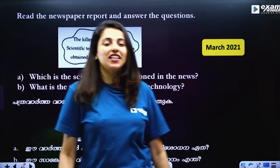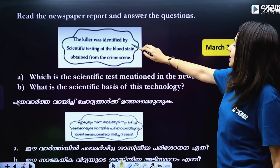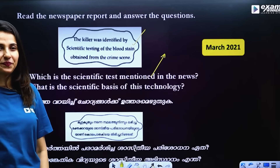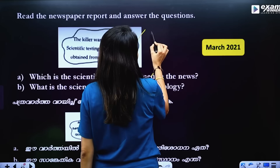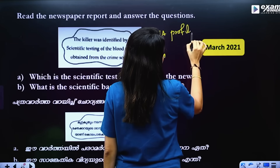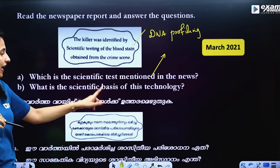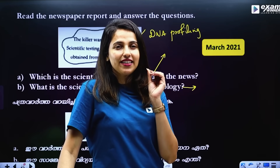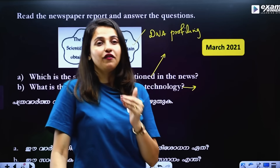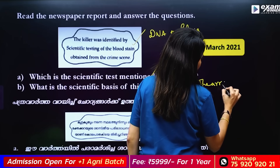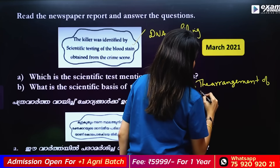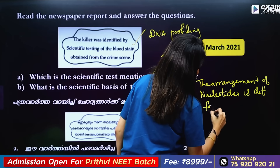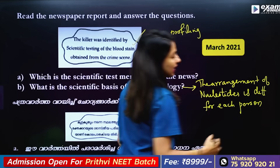The next question is about genetics and DNA fingerprinting. The scientific basis of this technology is the arrangement of nucleotides in DNA, which is different for each person.